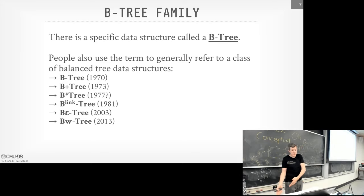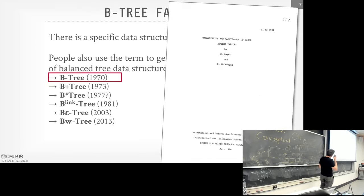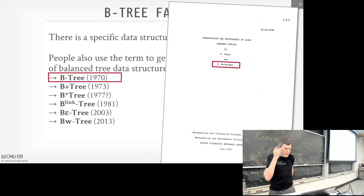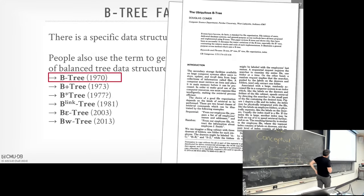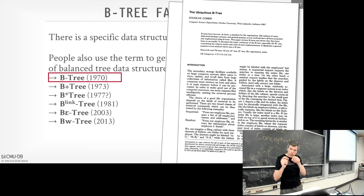The original B tree paper is from 1970. There's also a survey paper from 1979 out of IBM called 'The Ubiquitous B-Tree,' which describes how widely employed this data structure already was by then — that's why it was called ubiquitous. Even nearly 50 years later, the B+ tree is still the best data structure in most cases. We tweak it for modern hardware, but the core structure is essentially the same.